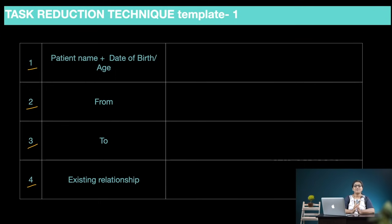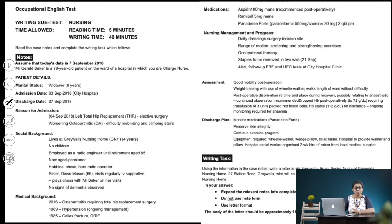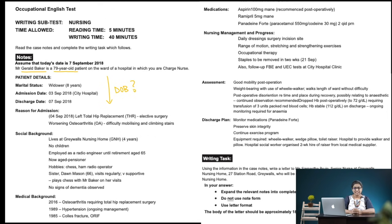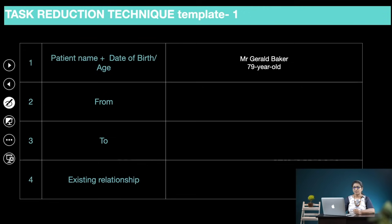We're going to fill in the first half of the task reduction template using the case notes. The first information is the patient's name and date of birth or age. Looking at the case notes, we can see his name is Gerald Baker and his age is given as 79 years old. We don't have a date of birth, but we know his marital status, which says widower for eight years. So we fill in the template: Mr. Gerald Baker, 79 years old.